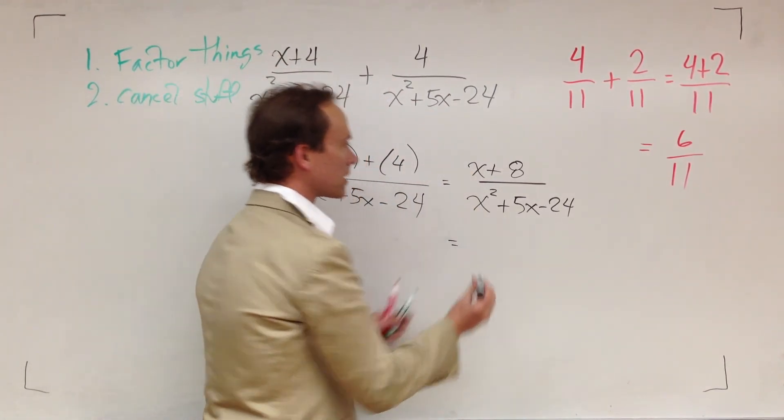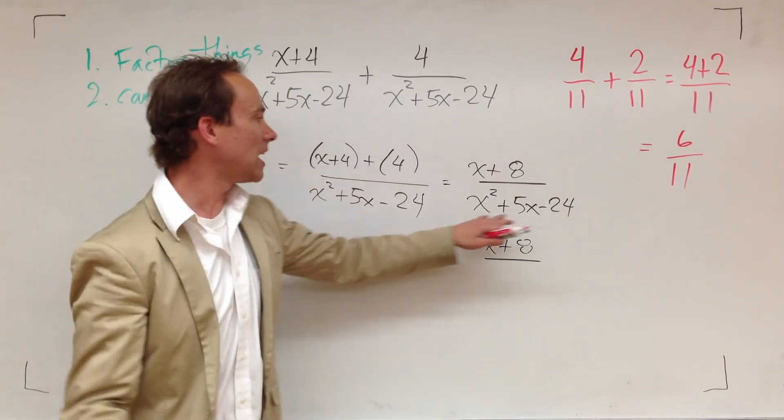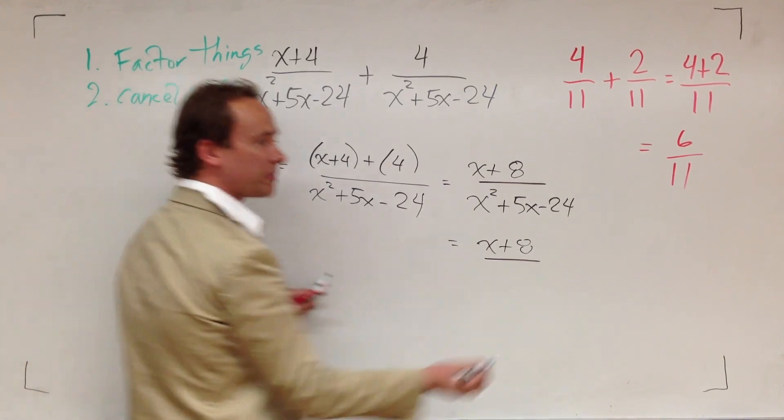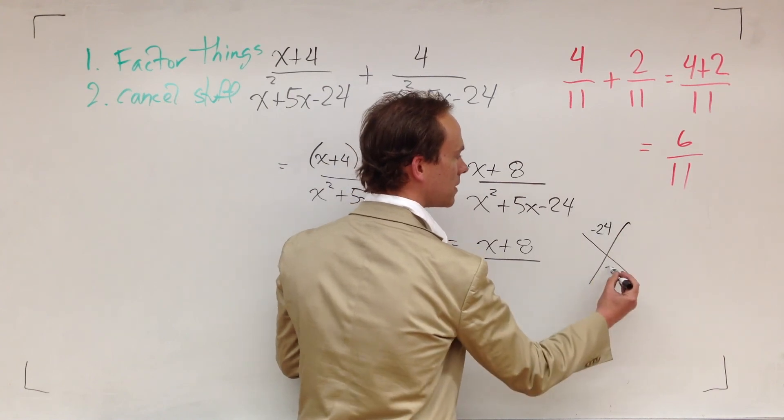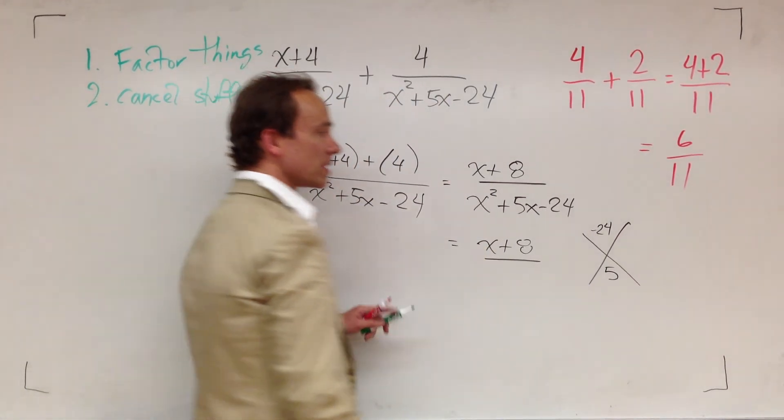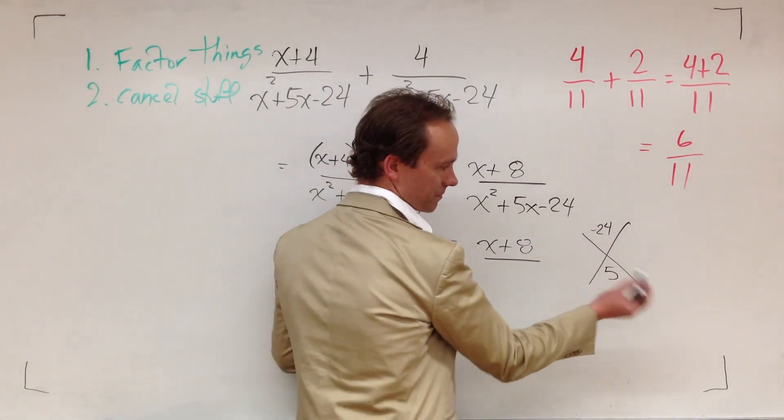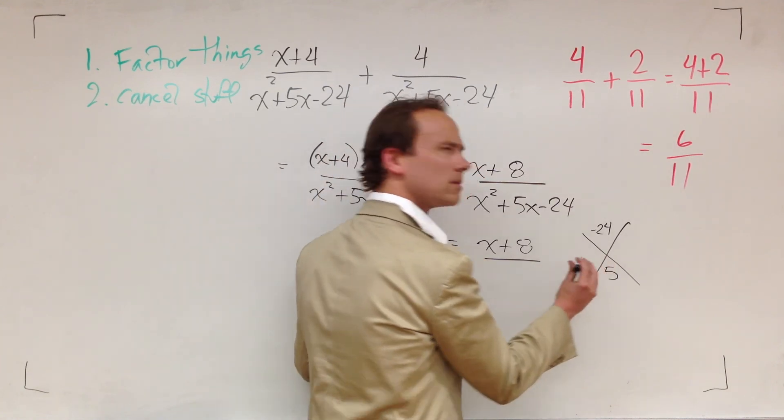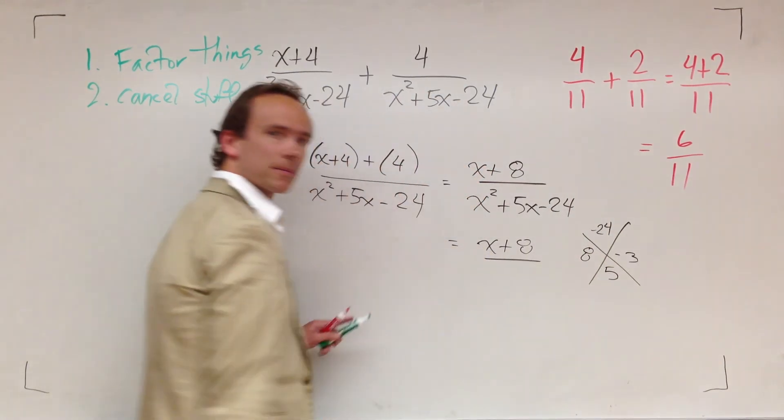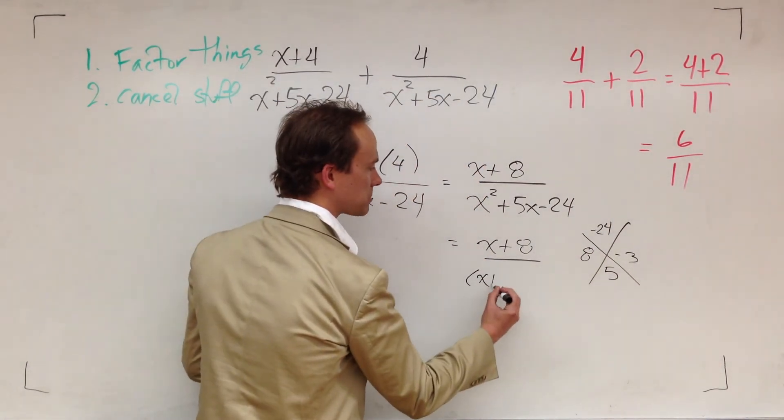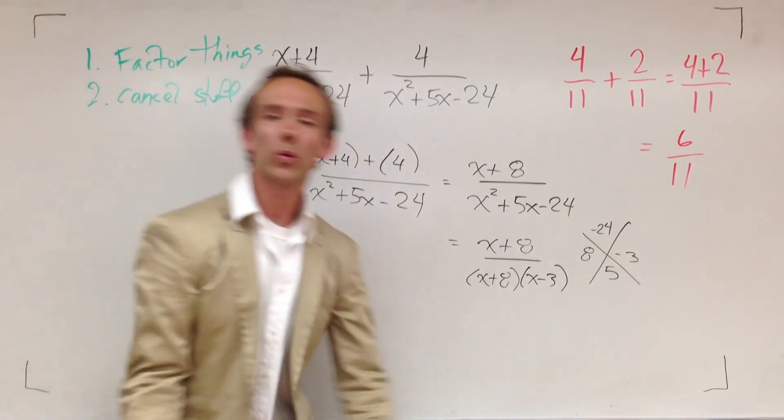Now look, the numerator you can't factor. It's x plus eight, so you keep it that way. This denominator is a trinomial. The way we've been rolling with the trinomial is we say, negative 24 on the top, five there. It's an x marks the spot problem. So you need two numbers that multiply to give you negative 24 but add to give you positive eight. Those two numbers are eight and negative three. So x plus eight times x minus three.